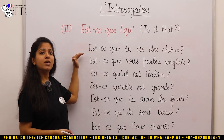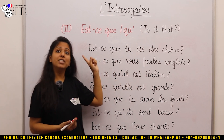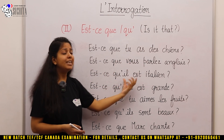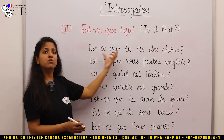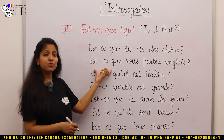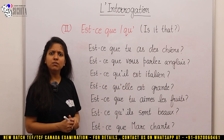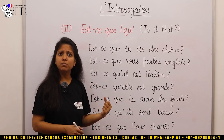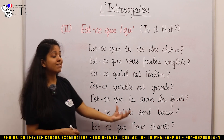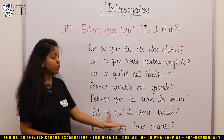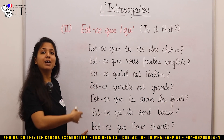For example: 'Est-ce que tu aimes des chiens?' — Is it that you have/like dogs? You could have said 'Tu aimes des chiens?' using intonation, or 'Vous parlez anglais?' — but the second way is by prefixing est-ce que. More examples: 'Est-ce que vous parlez anglais?' — Is it that you speak English? 'Est-ce qu'il est italien?' — Is it that he is Italian? 'Est-ce qu'elle est grande?' — Is it that she is tall? 'Est-ce que tu aimes les fruits?' — Is it that you like the fruits? 'Est-ce qu'ils sont beaux?' — Is it that they are handsome? 'Est-ce que Marc chante?' — Is it that Marc sings? You are just prefixing est-ce que and it becomes a question.